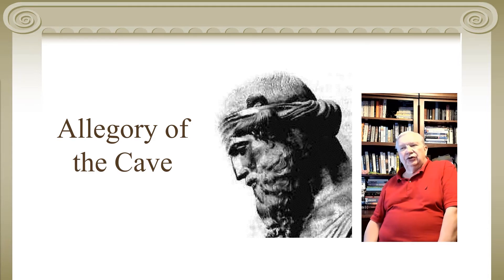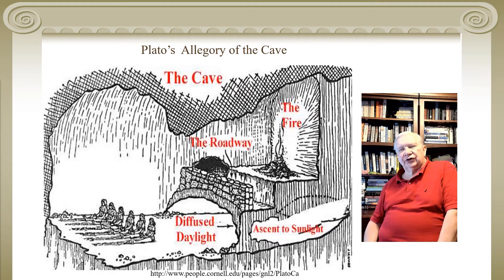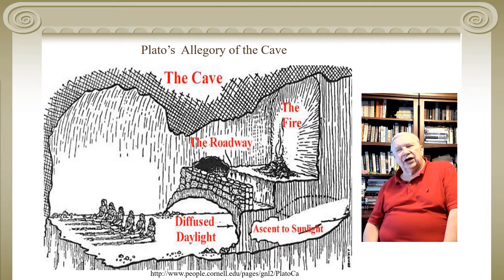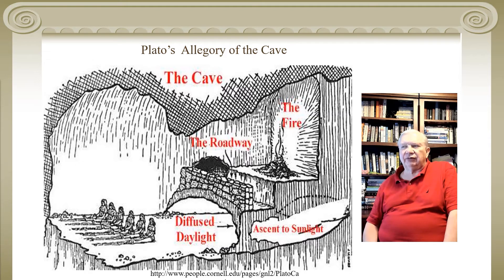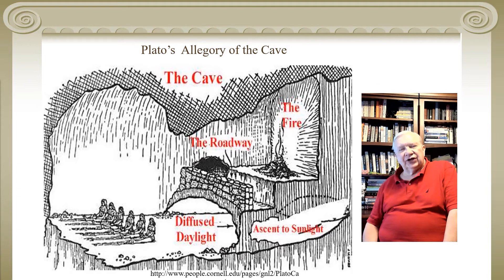In Plato's story there is a cave, and there are several prisoners shackled to the floor of the cave. The cave has a road running through it with a fire behind that road — always burning — and the cave opens up to sunlight. All the prisoners, who can't turn around, see only the projections of things that pass by: the shadows. These individuals are living in a very shadowy world.